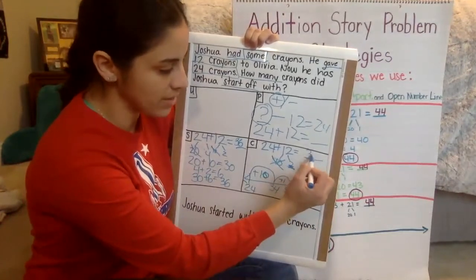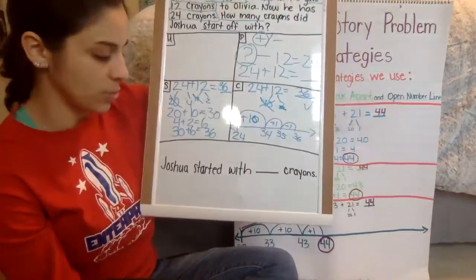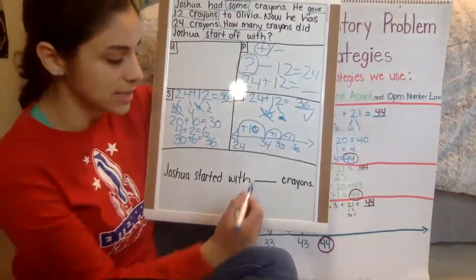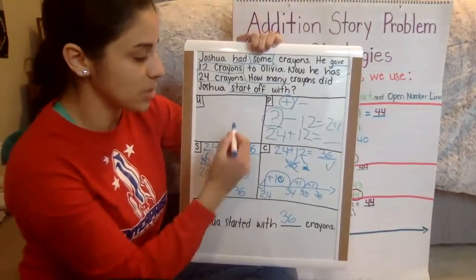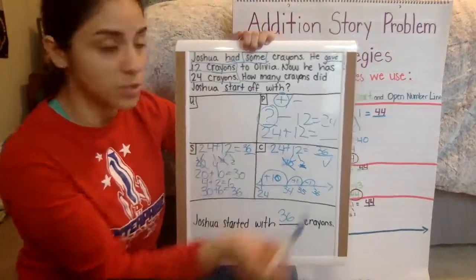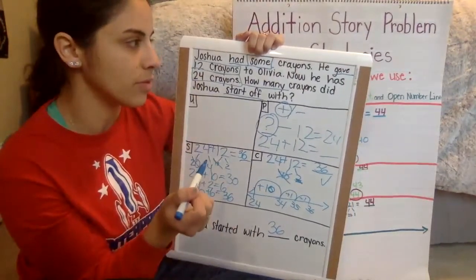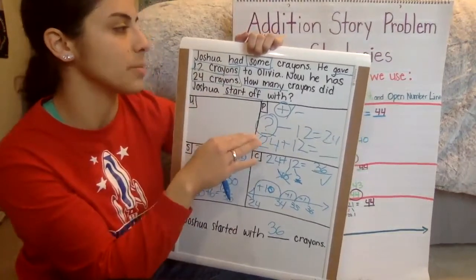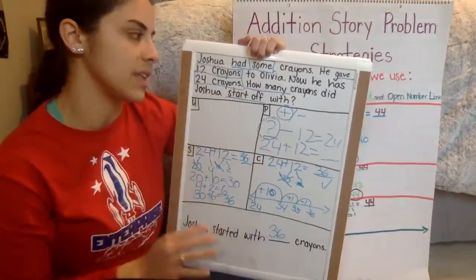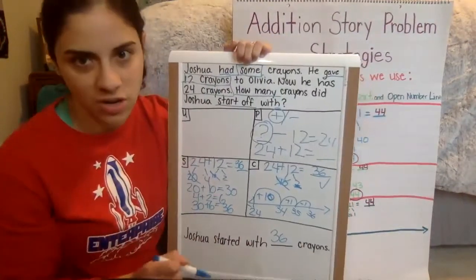And it looks like we got the same answer. So I'm going to put a check mark here. And then down at the bottom, it says, Joshua started with blank crayons. He started with 36 crayons. So he started off with some crayons, he gives 12 to Olivia and he has 24 crayons left. And we found out that he started off with 36.